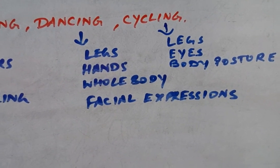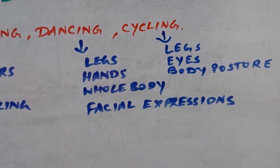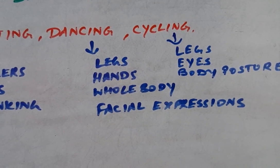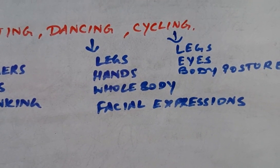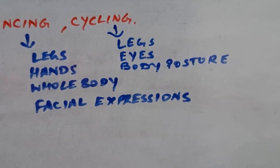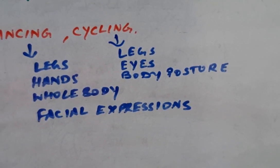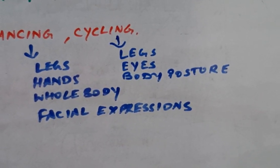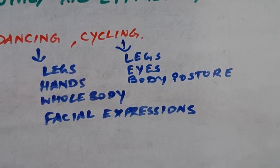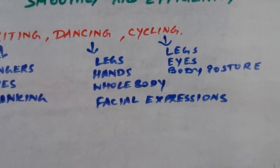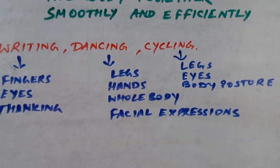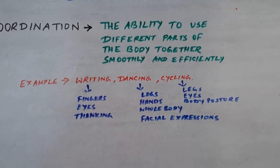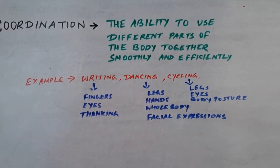In case of dance, your legs, feet, whole body, and facial expressions are changing every now and then — all these body activities are coordinated together to perform a dance. In case of cycling, your legs are paddling, your eyes are looking forward for vehicles, and your body is maintaining posture on the seat. All these activities are going on in a well-coordinated manner — that is coordination.